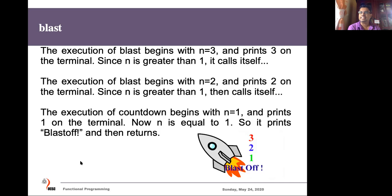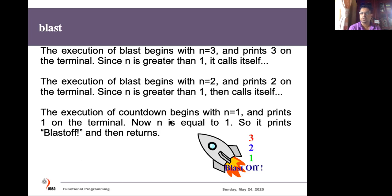The execution of 'blast' begins with n=3 and prints three. Since n is greater than one, it calls itself with n=2, prints two. Since two is greater than one, it calls itself again and execution starts with n=1, printing one. Now n equals one, so it prints 'blast off' and stops calling the function repeatedly. This condition which stops the recursive calling is called the base condition.